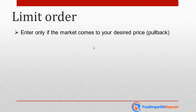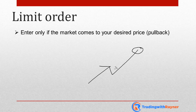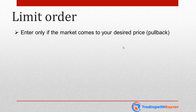The second type of order is what we call a limit order. You only enter the market if the price comes to your desired level. For example, the market is trading higher and you don't want to go long at this price — maybe you think it's too overbought, too high. Instead, you want to buy at a lower price. So you can put in a limit order at this level, at this previous resistance turned support. If the market does come back lower and hit this level, you will be filled on your trade. This is what I mean by entering only if the market comes to your desired level — it's usually a pullback.